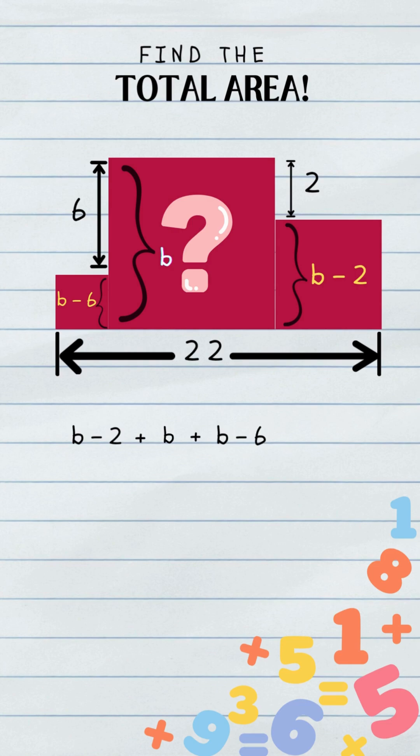B minus 2 plus B plus B minus 6 equals 22. B plus B plus B. That's 3B. Negative 2 and negative 6 combine to negative 8. So 3B minus 8 equals 22. Pop that 8 over to the other side. It flips positive. 22 plus 8 is 30. 3B equals 30, which means B is 10.